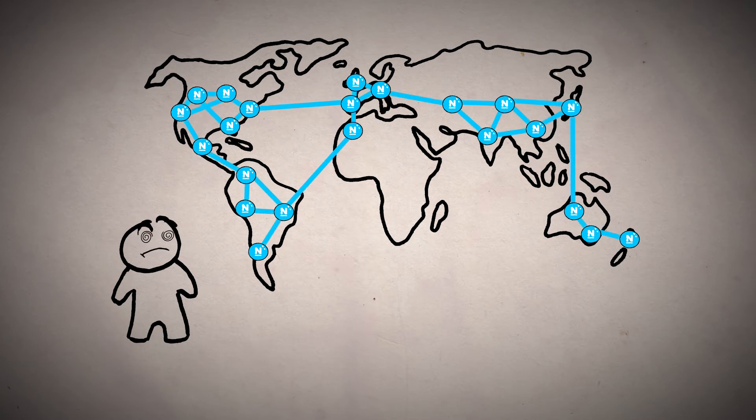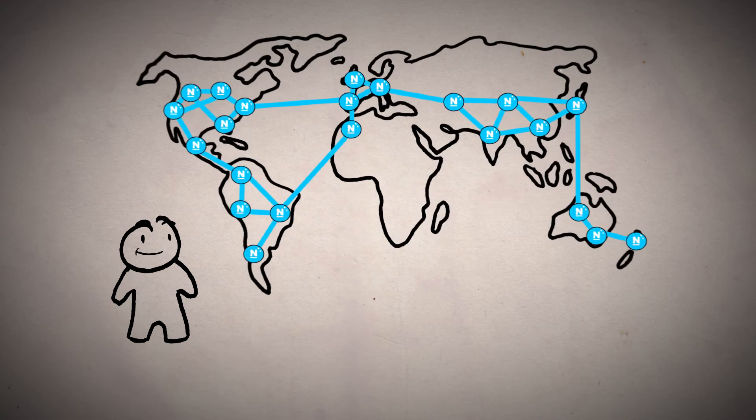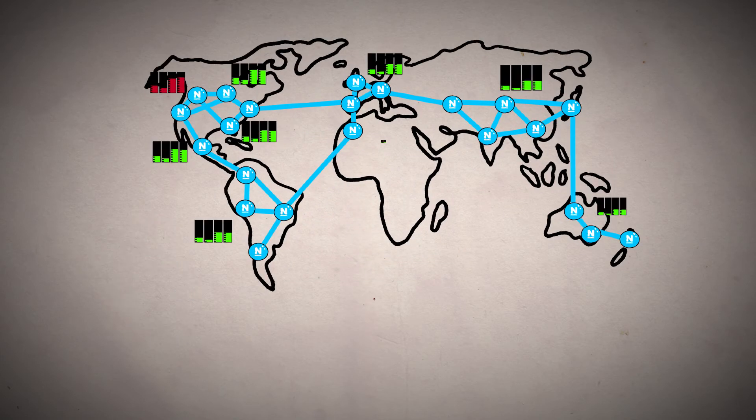With Nagios Fusion you can look at one screen, view one dashboard and be able to oversee and manage your entire monitoring system. Fusion gives you an at-a-glance overview of how your large geographically diverse network is functioning.